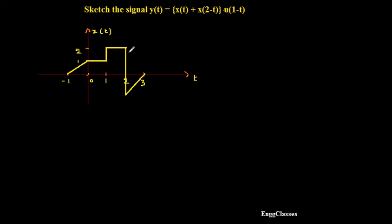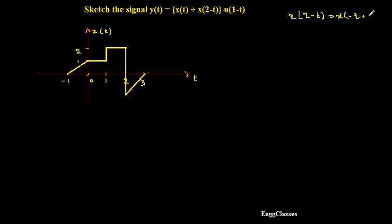X of 2 minus t is a shifted and reflected version of X of t. There is a shift and there is a reflection. As per the precedence rule, first I have to shift the signal and later I have to reflect the signal. So I can write X of 2 minus t as X of minus t plus 2. First I will sketch X of t plus 2, and then reflect that signal to get X of 2 minus t, which I will then add with X of t.